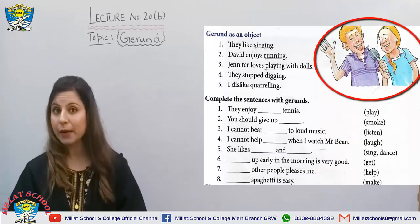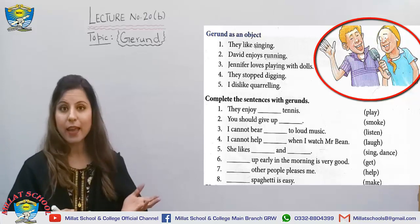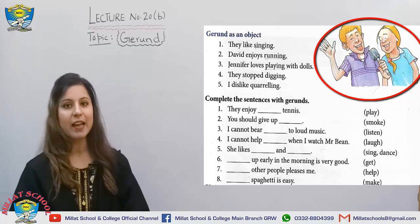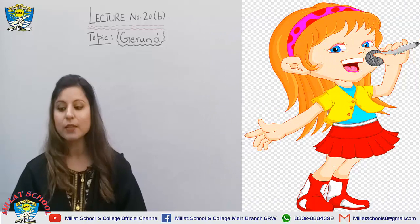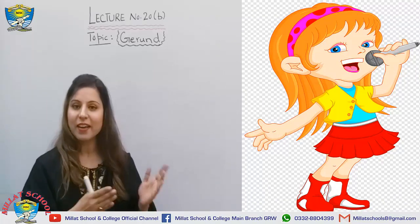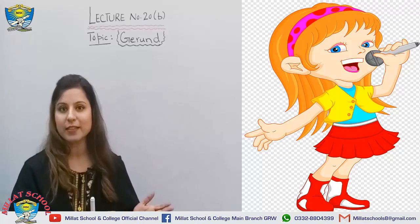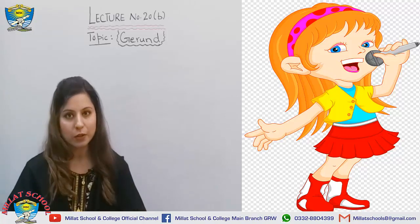In the second picture, 'They like singing' — here 'singing' is an object, and I have used the gerund as an object. The next example is 'What I like is singing' — here 'singing' with the -ing suffix is a complement of the verb. And 'I am fond of cooking' — 'of cooking' is the object of the preposition.